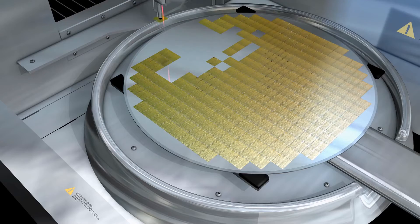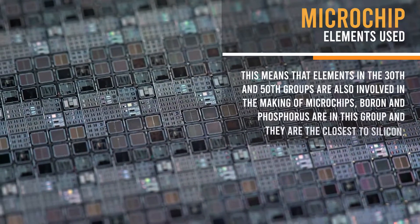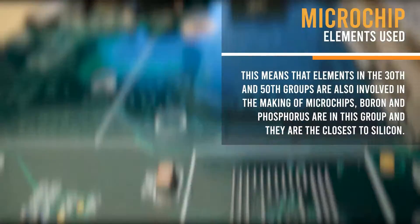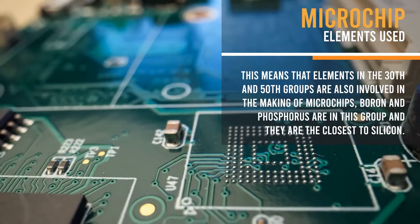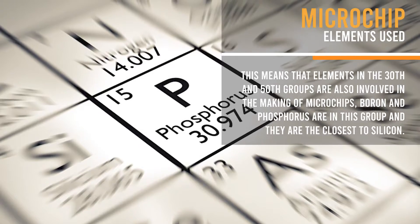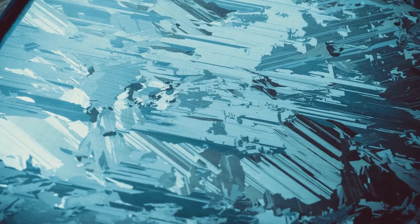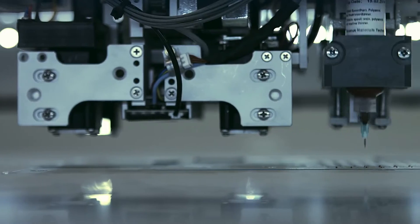Silicon is a semiconductor, which means it can conduct electricity. It is in the 40th group in the periodic table. This means that elements in the 30th and 50th groups are also involved in the making of microchips. Boron and phosphorus are in this group, and they are the closest to silicon. Complex physical and chemical processes are required to ensure that silicon crystals meet the high production standards for making microchips.